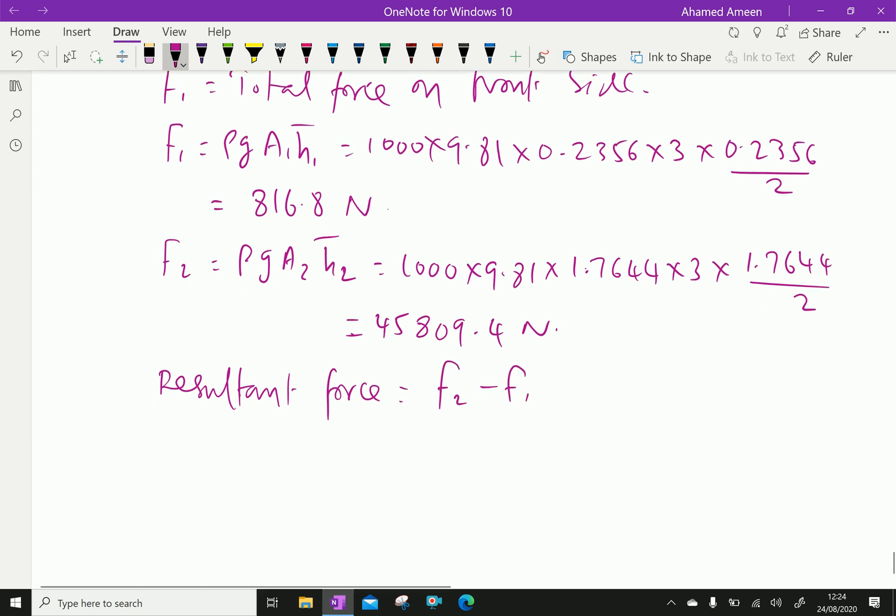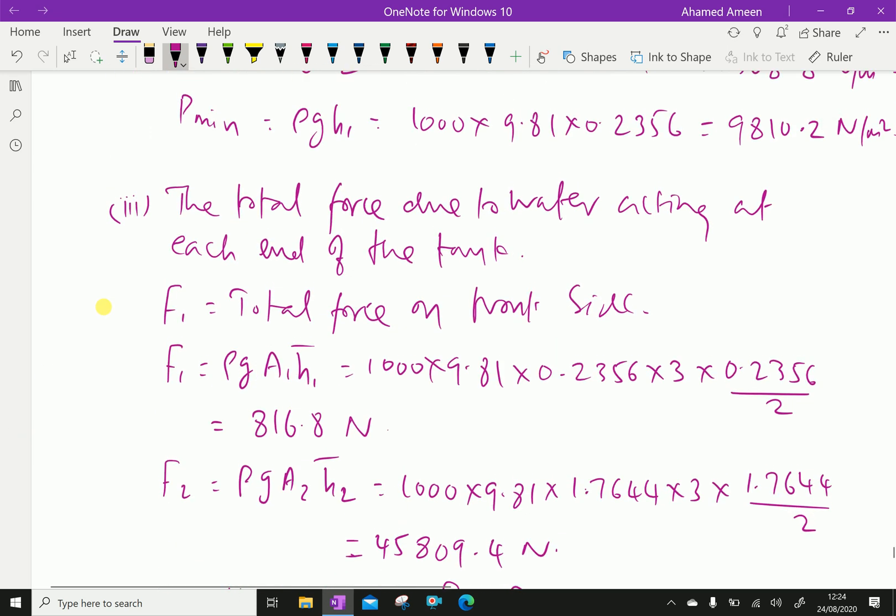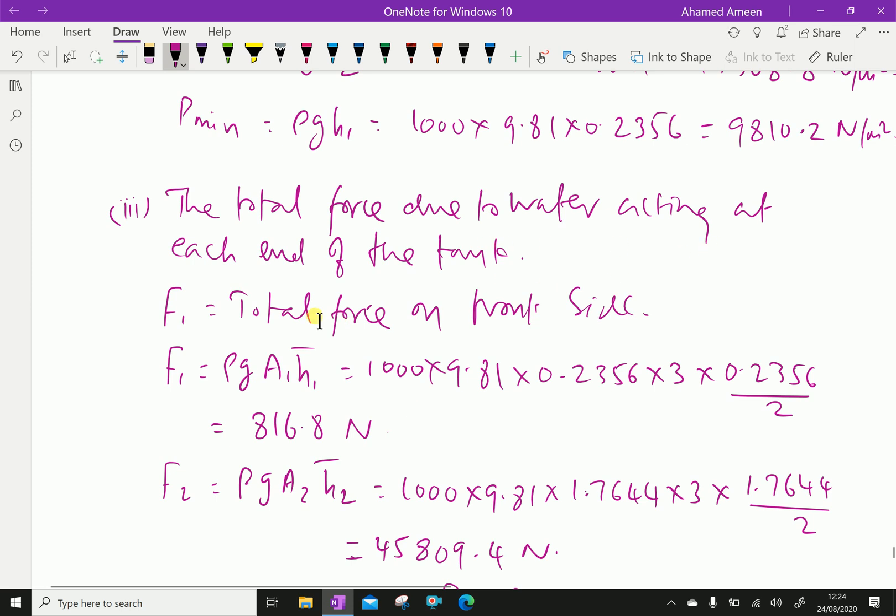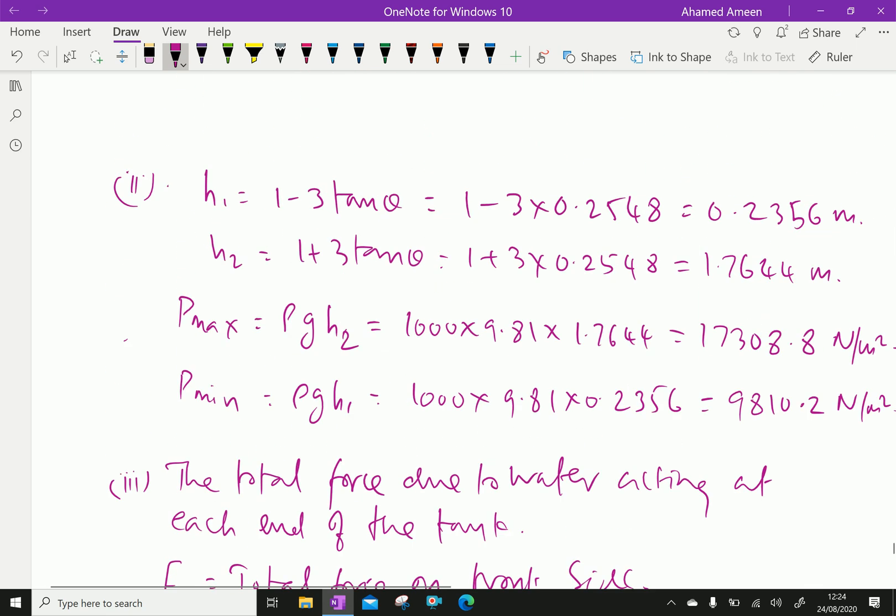F2 minus F1 equals 45809.4 minus 816.8, which gives the resultant force 44992.6 Newtons. This is the total force or resultant force due to water acting at each end of the tank. We have done. Please subscribe to our YouTube channel.